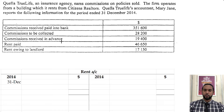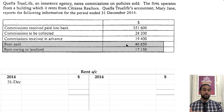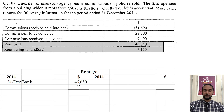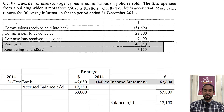Let's take a look at the rent account now. For rent we just have these two items: rent paid $46,650, rent owing to landlords $17,150. The rent paid would be credited to bank or cash because if you're paying, your asset is going down — to record a decrease in an asset you credit the asset account — and you debit the rent account for $46,650. Similarly, rent owing to the landlord is an accrued expense, a current liability, which will be brought down on the credit side. The balancing figure is the rent expense figure of $63,800.